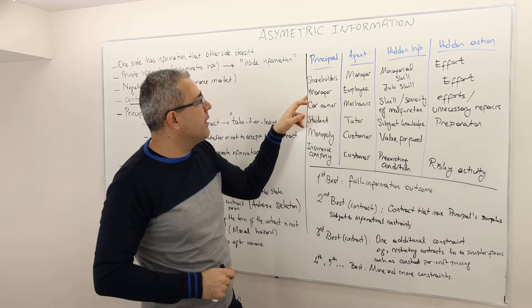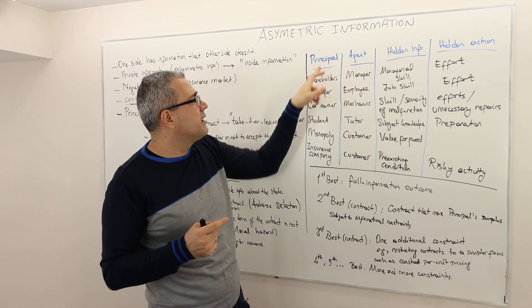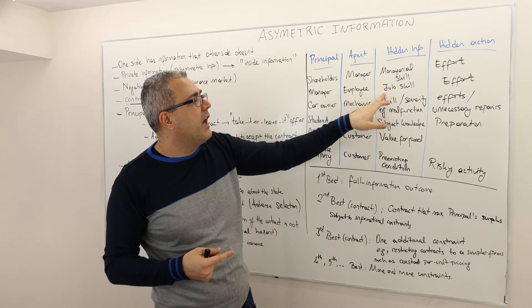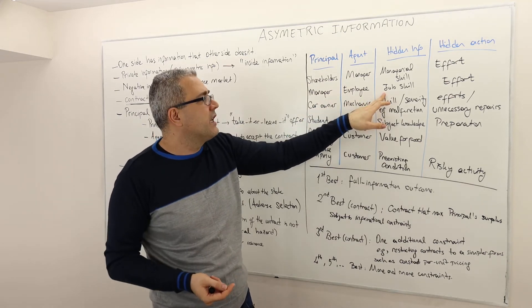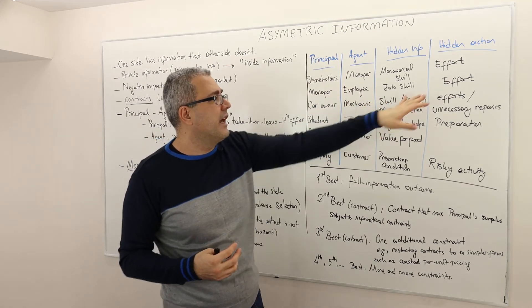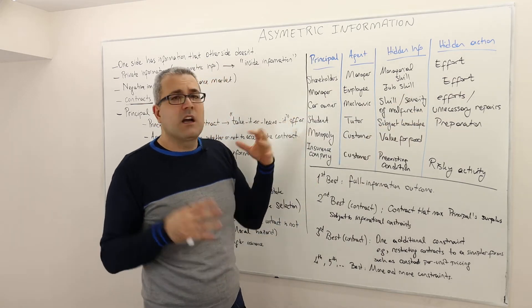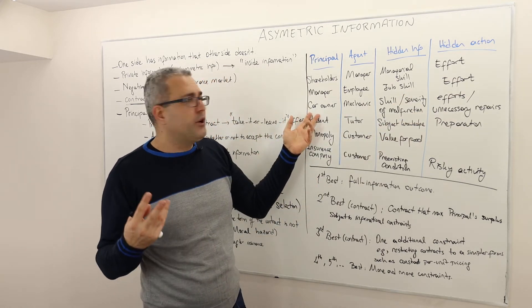Another example, a manager and employee. Employee is the agent, manager is the principal. And here again, the job skills may be hidden information, and again the effort could be the hidden action.